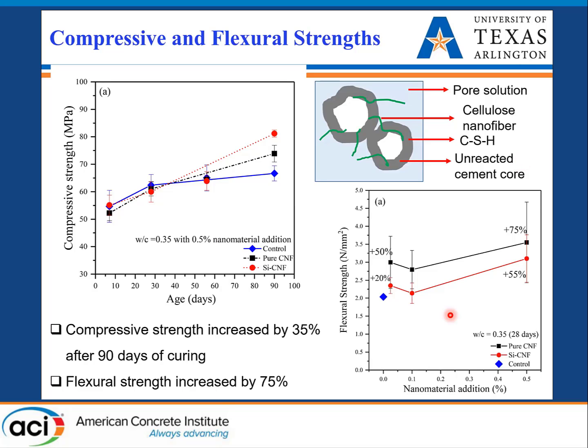In the case of flexural strength, cellulose nanofiber has a good aspect ratio so it can work as nano-reinforcement, and we have seen that it can increase flexural strength by up to 75 percent.